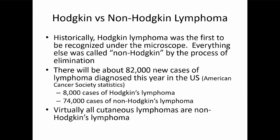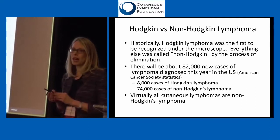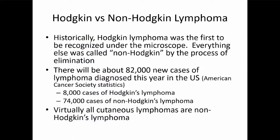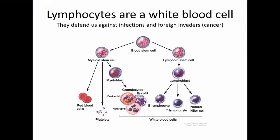A little bit of a history lesson. Hodgkin's lymphoma were the first types of lymphoma cells that were really recognized when pathologists would look at cells under the microscope — this was way before we had molecular tests. Anything that was not a Hodgkin's lymphoma was called a non-Hodgkin's lymphoma, and that designation still stands today. Hodgkin's lymphomas are very rarely found in the skin, so most people with a cutaneous lymphoma will have some sort of non-Hodgkin's lymphoma. There are about 82,000 cases of lymphoma diagnosed in the United States per year, and about 8,000 of those are Hodgkin's — everything else is a non-Hodgkin's lymphoma.